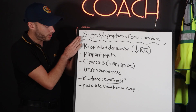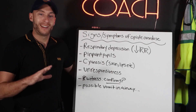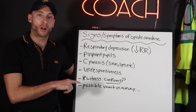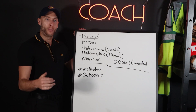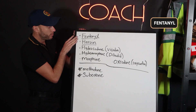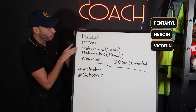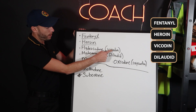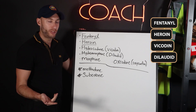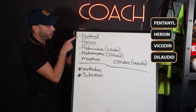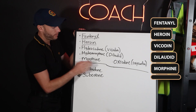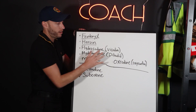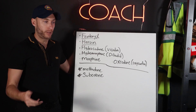Before wrapping up, here are some common opiate medications and brand names to know so you don't get caught off guard. Common opiates include: fentanyl (generic: Sublimaze), heroin, Vicodin or hydrocodone, hydromorphone (brand: Dilaudid), morphine, and oxycodone (brand: OxyContin). These are some of the most common opiates you'll hear about — keep on the lookout for those.